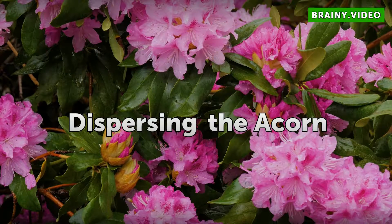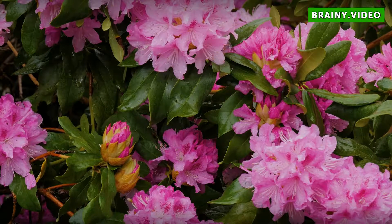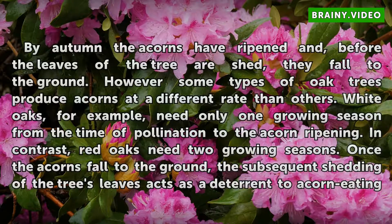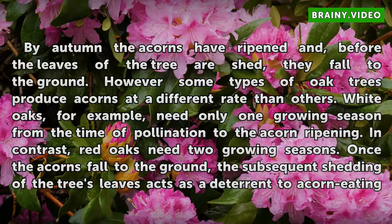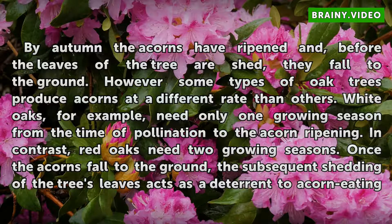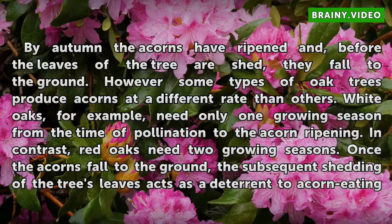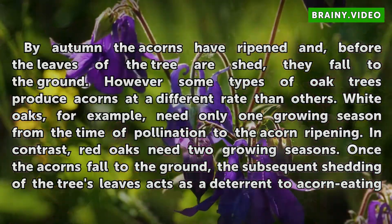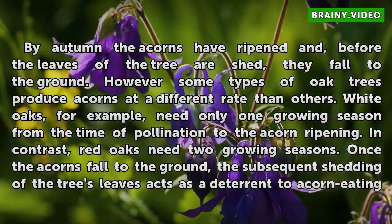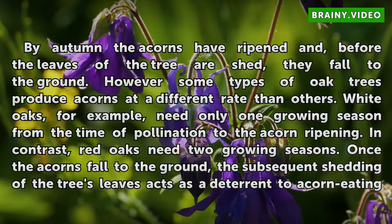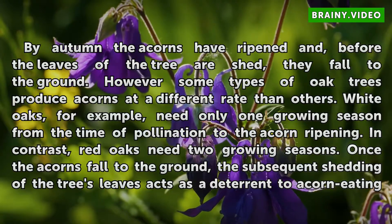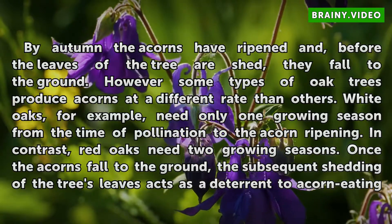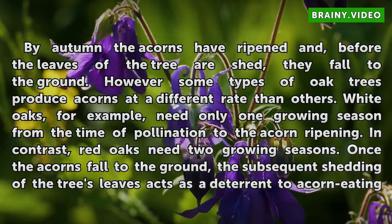Dispersing the Acorn. By autumn the acorns have ripened and, before the leaves of the tree are shed, they fall to the ground. However, some types of oak trees produce acorns at a different rate than others. White oaks, for example, need only one growing season from the time of pollination to the acorn ripening. In contrast, red oaks need two growing seasons.